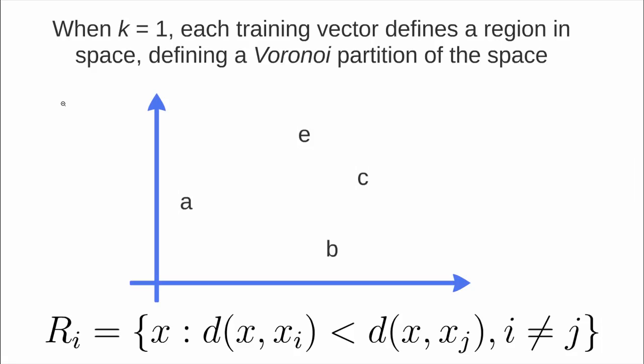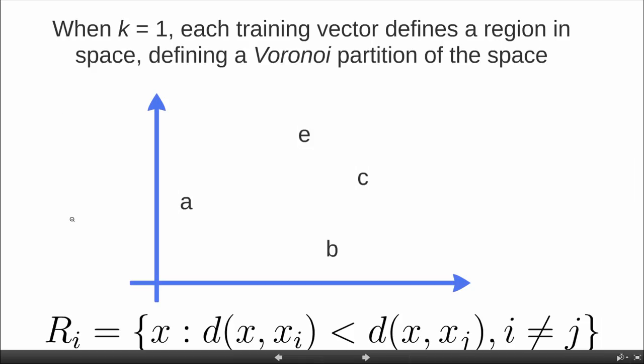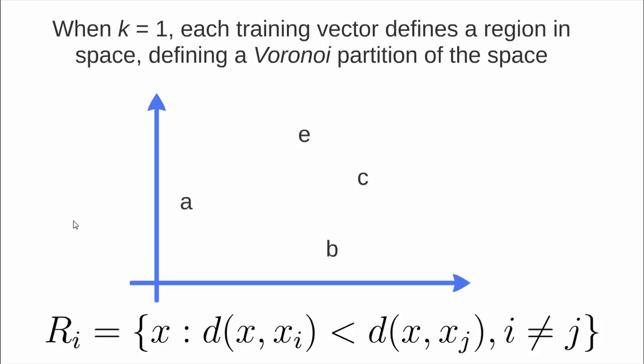A property we have is that each region is defined by this equation. The distance between each element x and x_i has to be smaller than the same distance for each other element. In this case we define a Voronoi partition of the space.